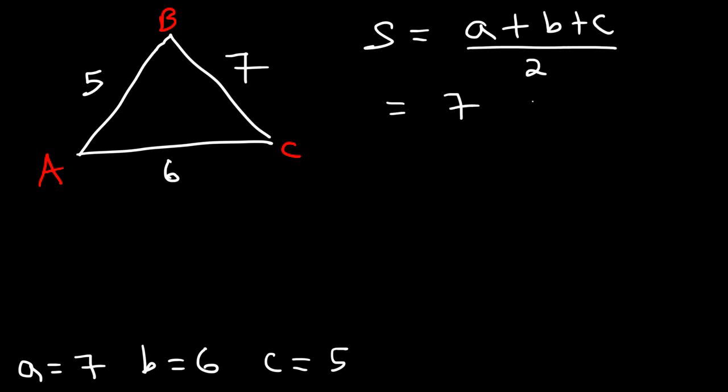So A is 7, B is 6, C is 5. 7 plus 6 is 13, 13 plus 5 is 18, 18 divided by 2 is 9. So we have S.